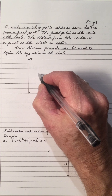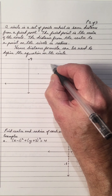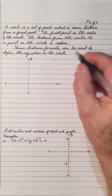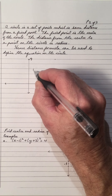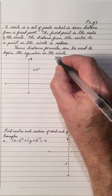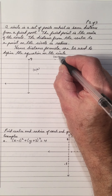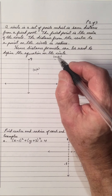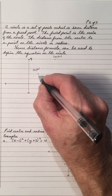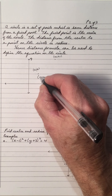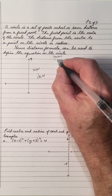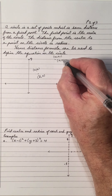Let's pick up a point on this here. Normally, we will call this point x1, y1, and this point x2, y2. But when we're doing the equation of a circle, we'll let x1, y1 be the center, which is h, k, and we'll let this point be x, y.